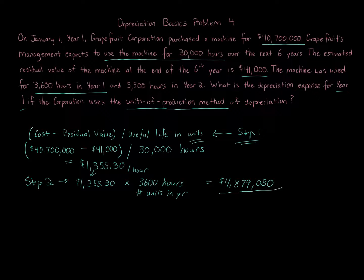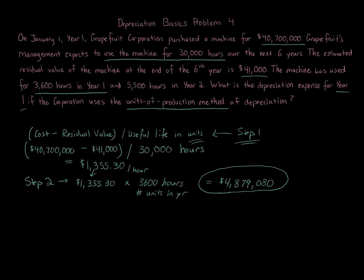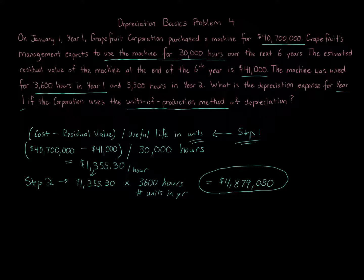To calculate Year Two, use the same Step One rate of $1,355.30 per hour and multiply by 5,500 hours used in Year Two. You can practice with other numbers as well. If total hours reach 30,000 before Year Six, stop depreciating at that point. If hours extend beyond Year Six, stop at Year Six and assign whatever depreciation remains — always keeping the residual value in mind so you never depreciate below it.